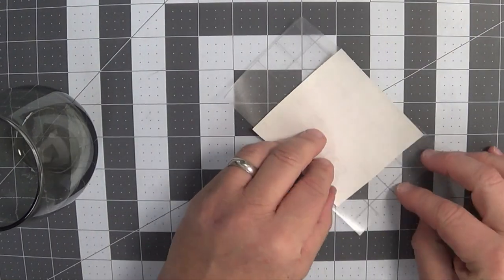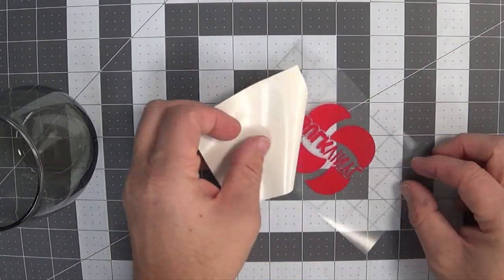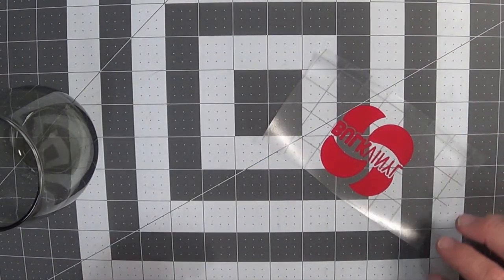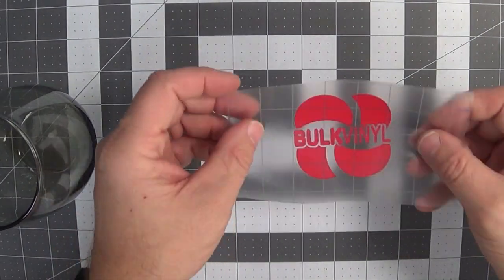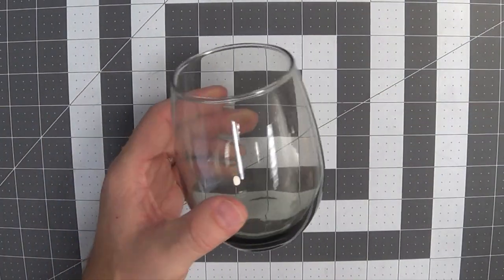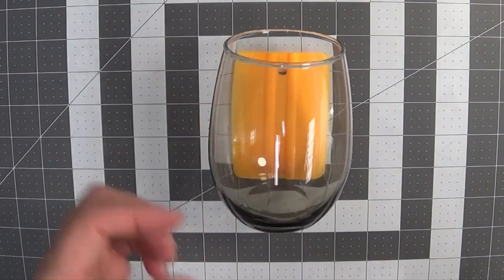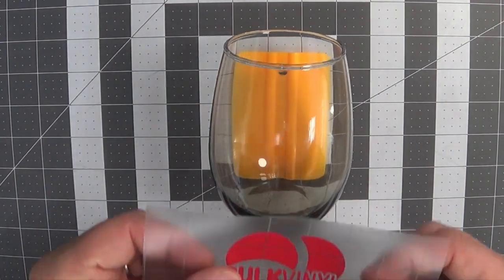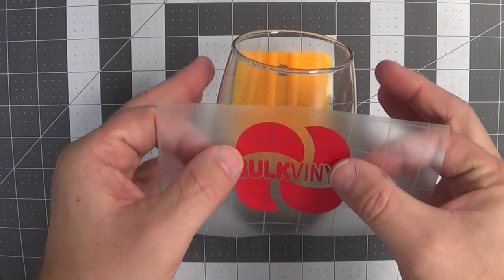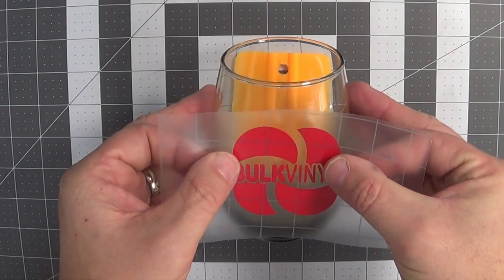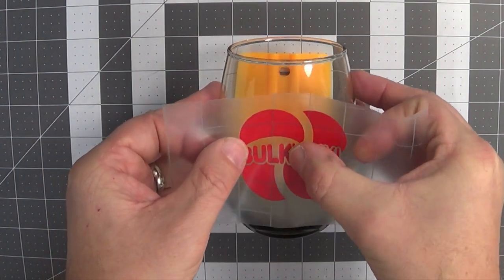So we'll get started here by just removing the vinyl. And again, if your vinyl doesn't come off that easy with a transfer tape, you need to evaluate what you have. I'm actually going to use my squeegee here to hold that wine glass into place.